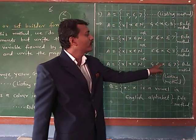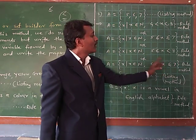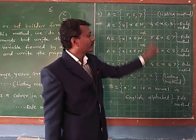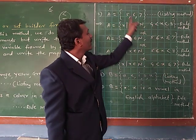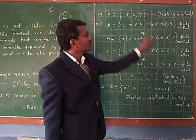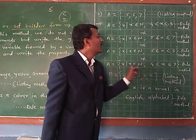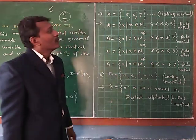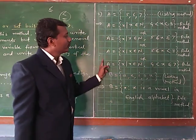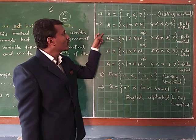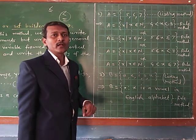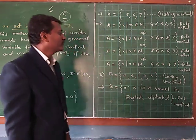Meaning the value of x is greater than 4, so x = 5, 6, 7. But in the exam, you write only one method. There are 4 methods — first, second, third, and fourth — but you write only one method in the exam.